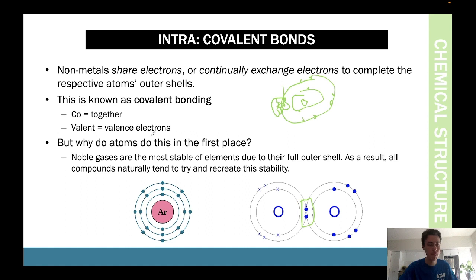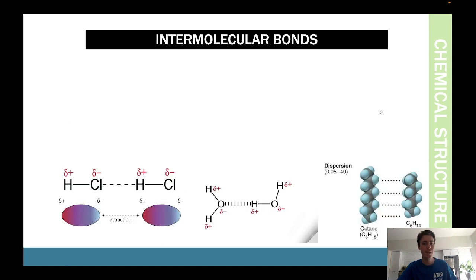Co means together, valent means valence electrons — that's why we call it covalent bonding. Atoms essentially just want to be stable. That's all you need to know about intramolecular bonds.